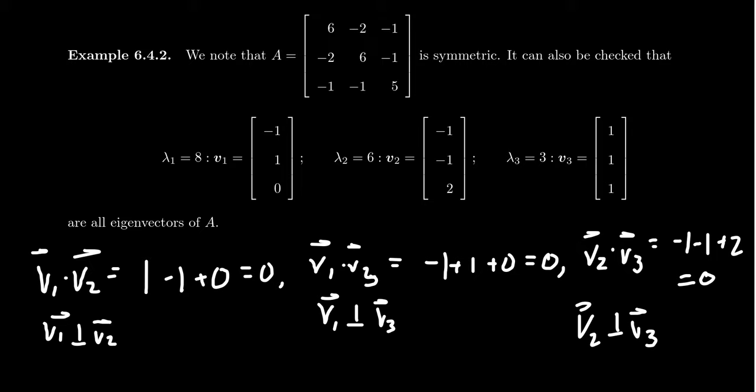And you can verify that these are, in fact, eigenvectors for this matrix. For example, if you take A times the vector 1, 1, 1, you can see very quickly that for the first entry, you get 6 minus 2 minus 1. You're going to get negative 2 plus 6 minus 1. And then finally, you get negative 1 minus 1 plus 5. And in all instances, those add up to be 3. These are, in fact, the real McCoy here, all of the eigenvectors and such.